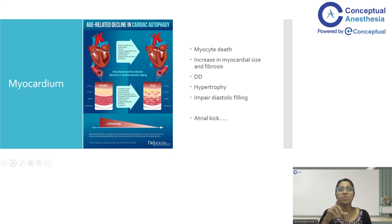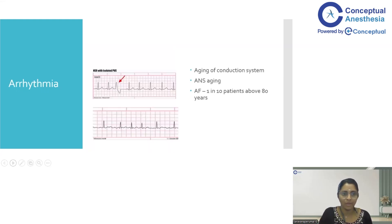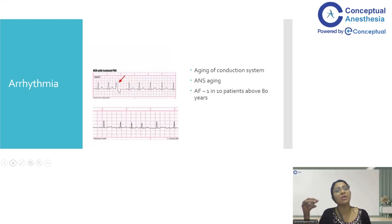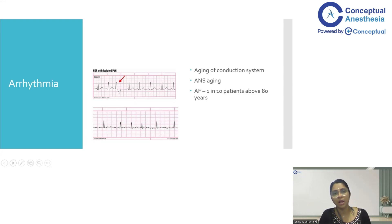When there is impaired diastolic filling, it is very important for the patient to maintain an adequate cardiac output — and that is the atrial kick. If the atrial kick is lost, the patient will not maintain forward flow and effective cardiac output. In an elderly patient, it is imperative to maintain sinus rhythm at all times. Fibrosis can also happen in the conductive system, leading to bundle branch block or complete heart block. The most common arrhythmia as patients advance in age is atrial fibrillation, occurring in one in ten patients above 80 years. If rhythm control is possible, it should be attempted first; if not, rate control can be pursued.